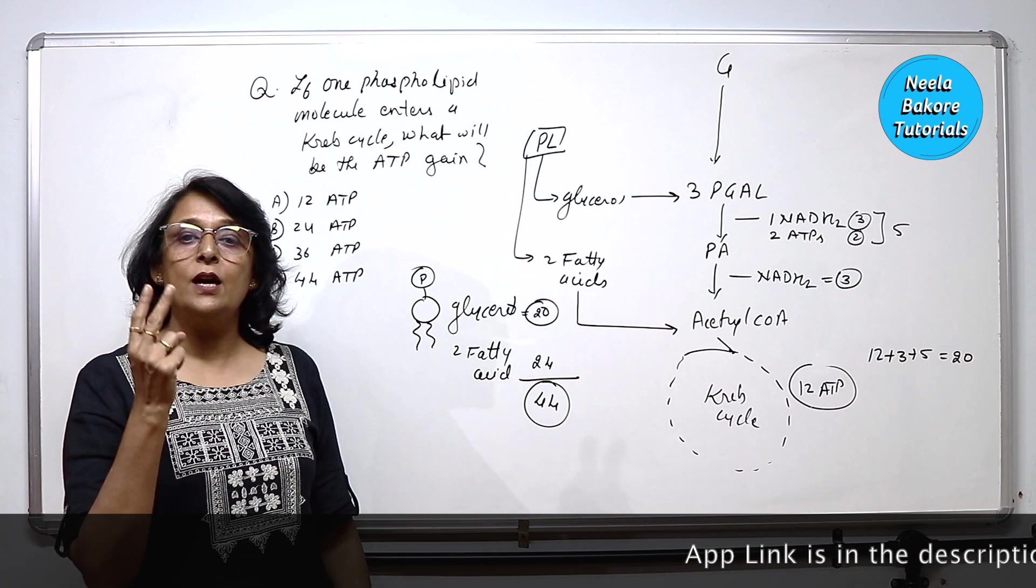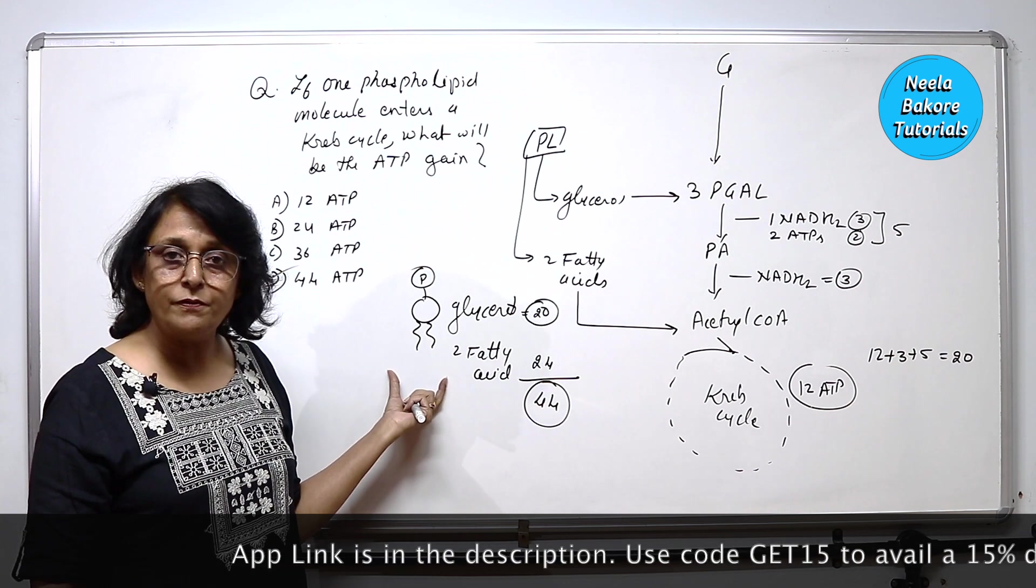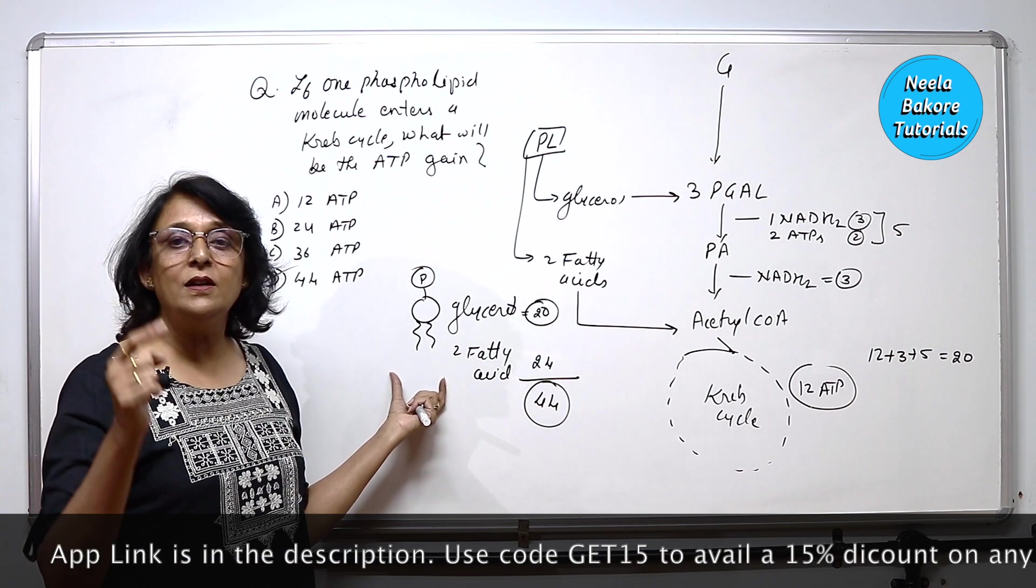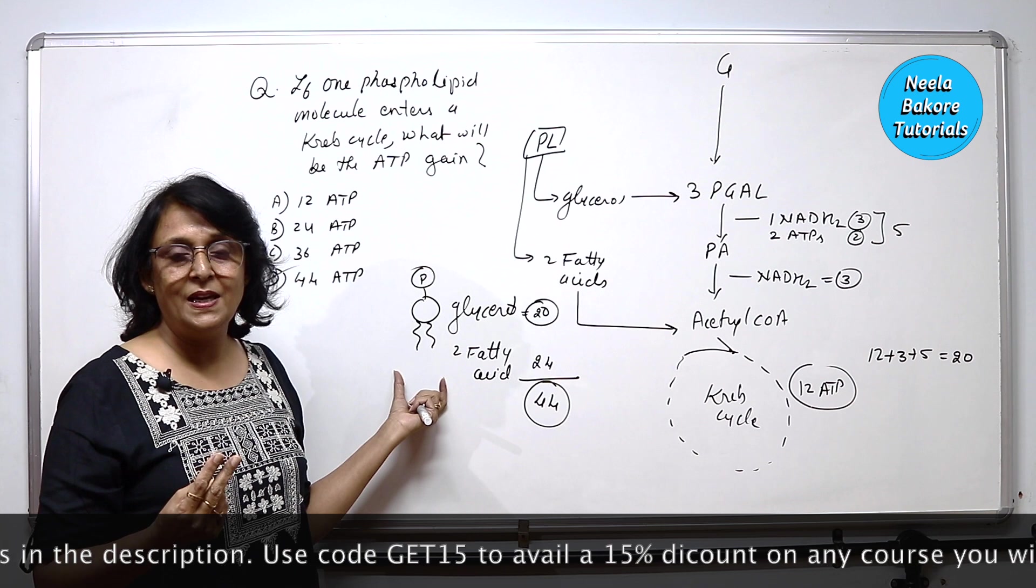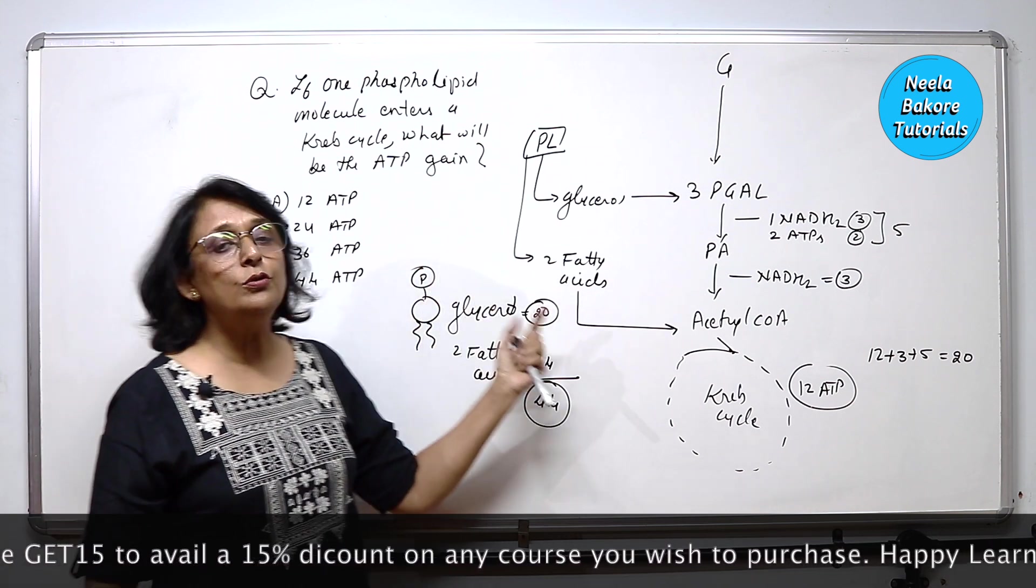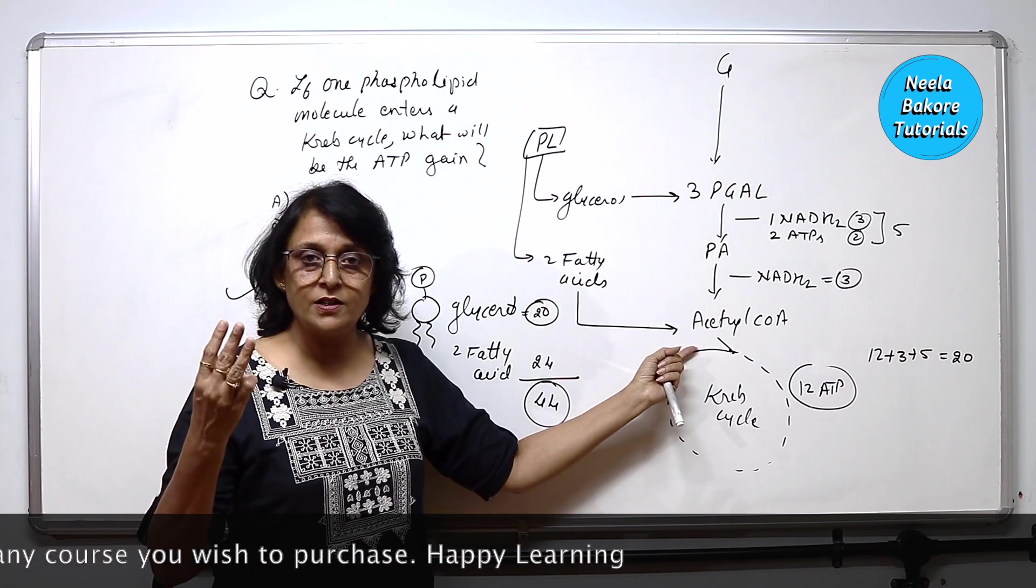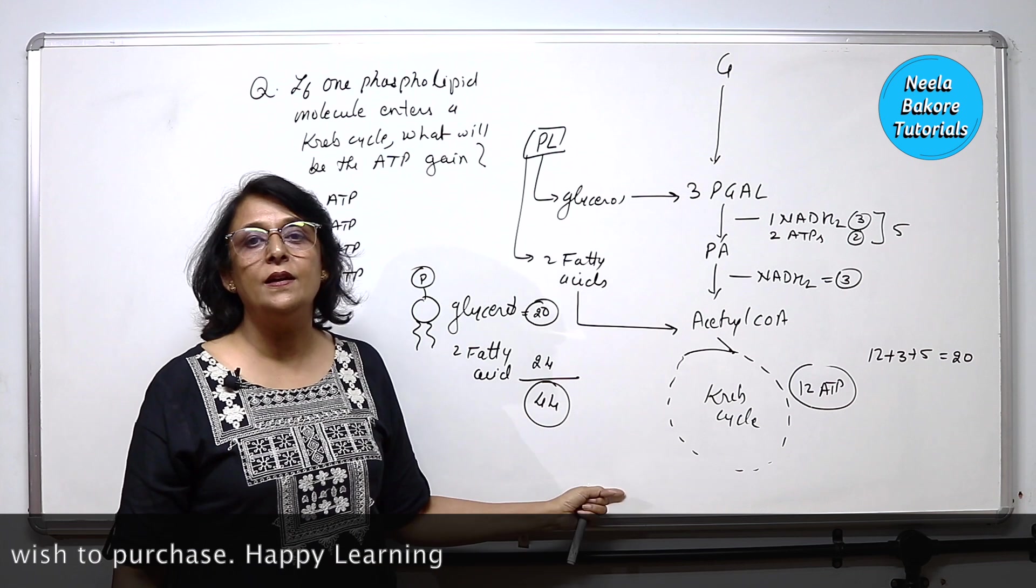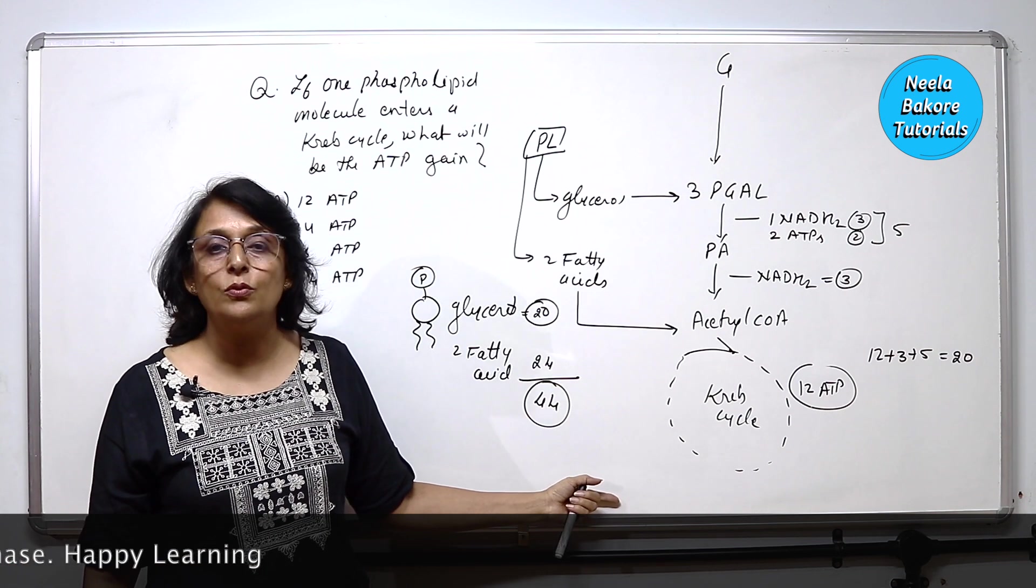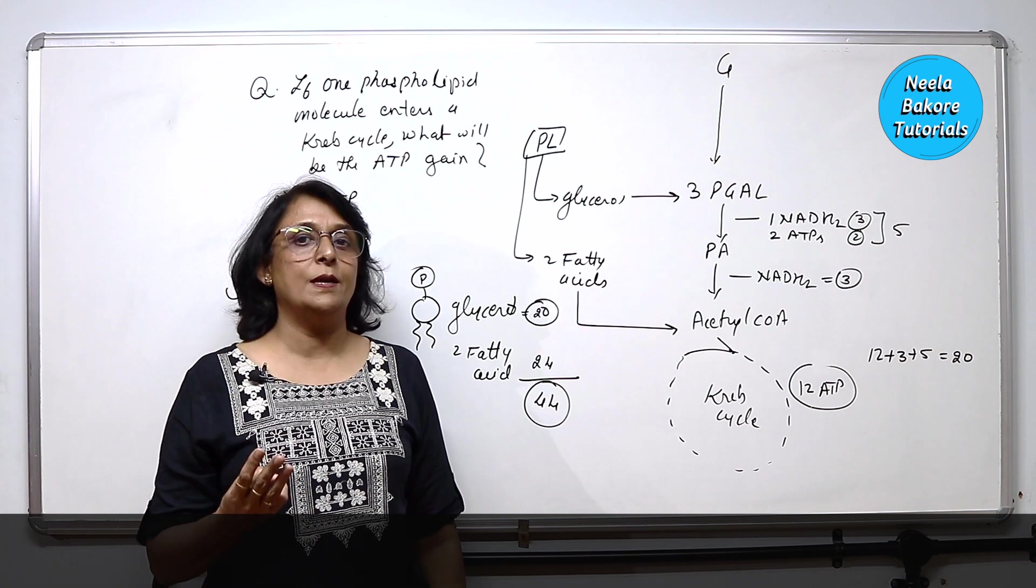But here there are two concepts which are checked. One, do you know what is a phospholipid made up of? It has one glycerol and two fatty acids. It is a diglyceride fat. Second concept, do you know that glycerol joins where and fatty acid joins where? Third concept, do you know the complete aerobic breakdown? So one question where your three concepts were checked.